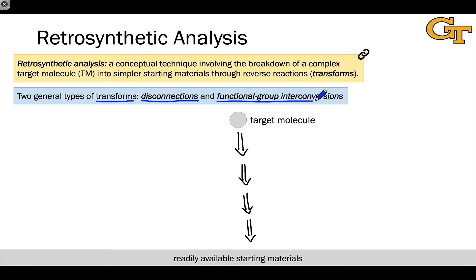And what these do, in essence, is kind of prime the structure to engage in a disconnection. Occasionally, we need to add a group or remove a group or modify a group in order to set up a disconnection. So let's look at disconnections and functional group interconversions in a little more detail.